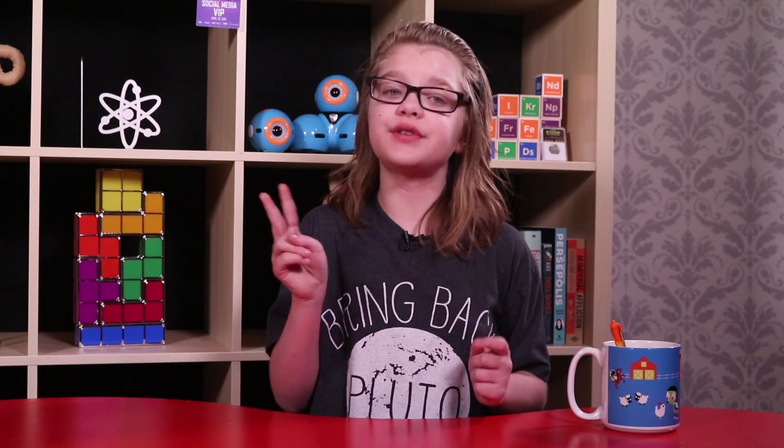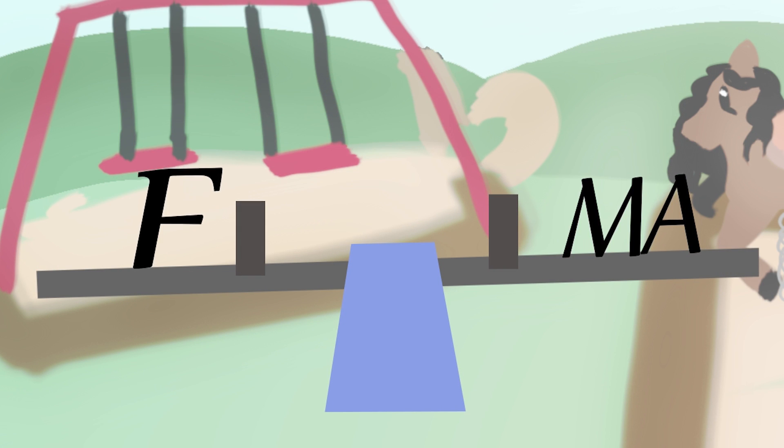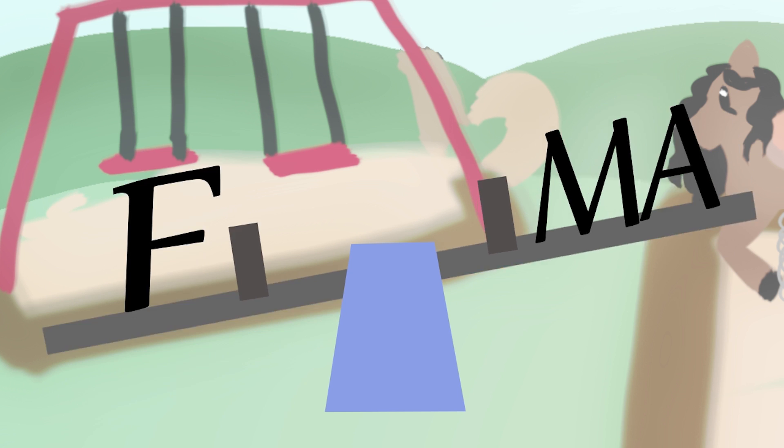Any time you have an equation like F equals ma, you can think of it like the two sides of the equal sign are balanced on a seesaw. It's all balanced. But what happens if we make the F bigger? Now it's unbalanced because the F side is heavier. How do we balance it out again?